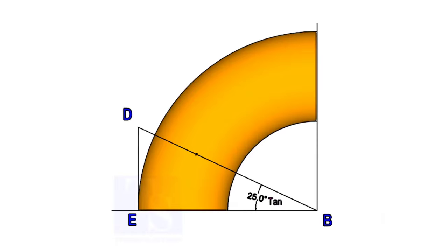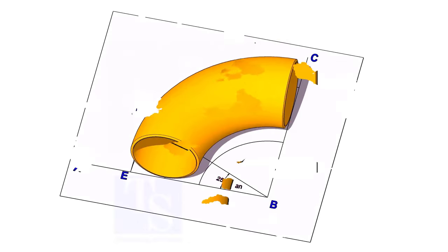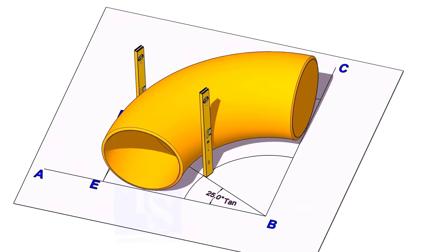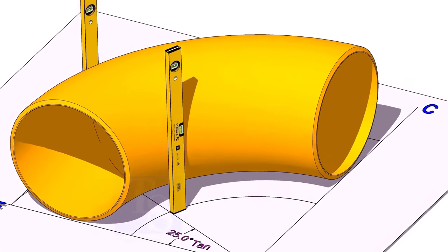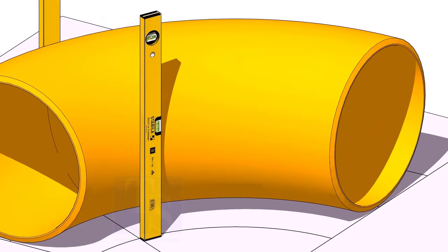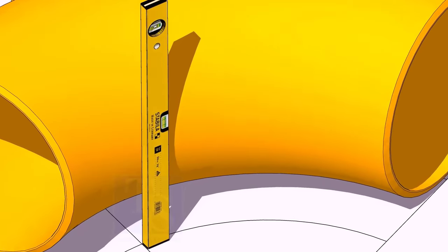Now, put the elbow exactly on the layout as shown. Hold two large level bottles at the edge of the elbow on both sides vertically, and strike a mark where the level bottle edge touches the elbow.